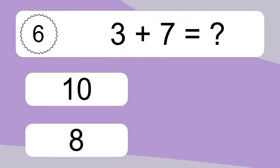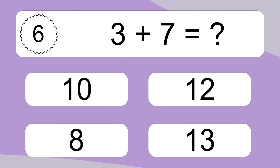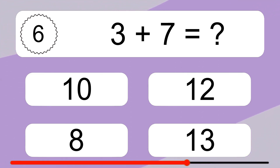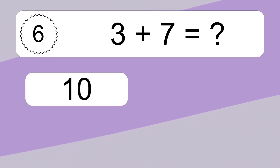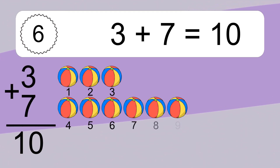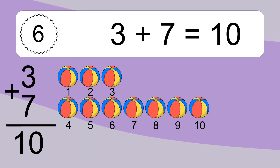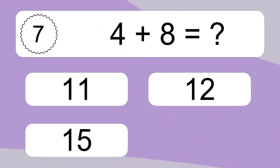Three plus seven equals what? Three plus seven equals ten. Let's count it: one, two, three, four, five, six, seven, eight, nine, ten.